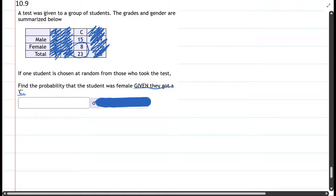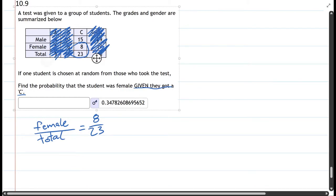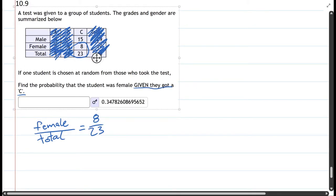We have females divided by total, and for females we have 8, total 23. This will be the probability that we're looking for. What you see here is a decimal, and if you divide 8 by 23 you'll get that value right there. You should be able to enter the fraction 8/23 and get credit for that.